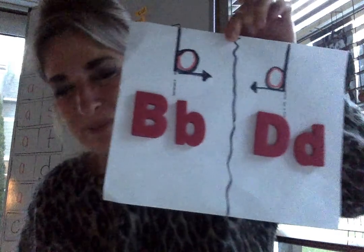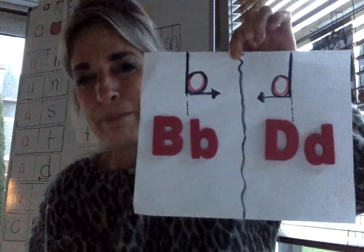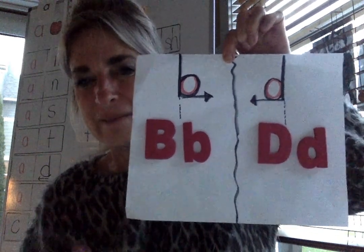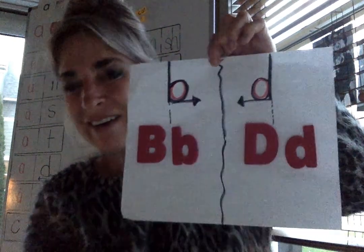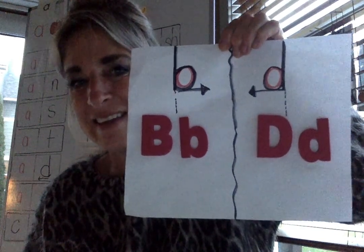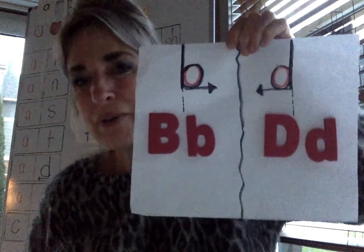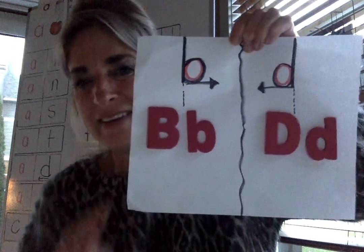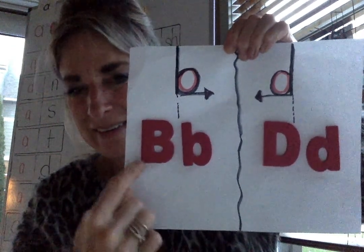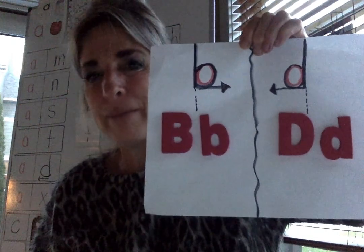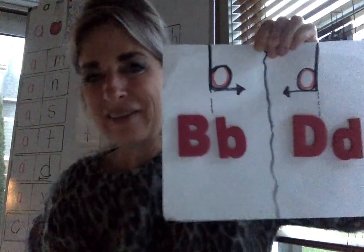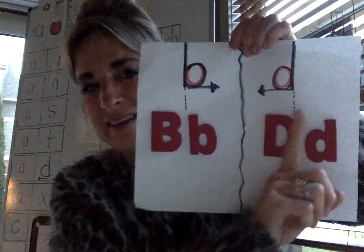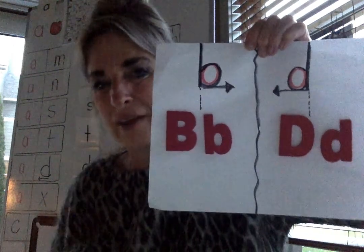We've been learning the tricky guy too. Who can point to the B? Who can point to the D? Who can point to the uppercase D? Who can point to the uppercase B? The B has its belly going the way you read. Lowercase D — belly not going the way you read.